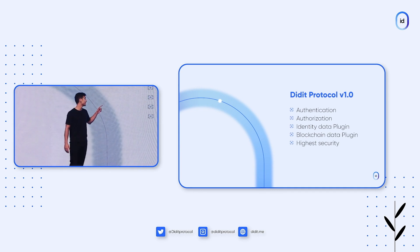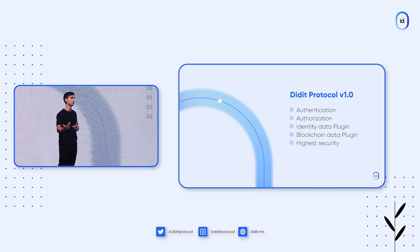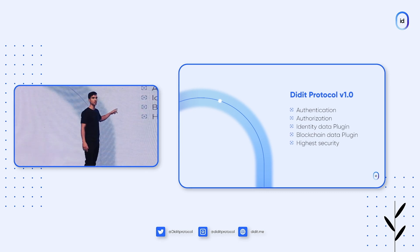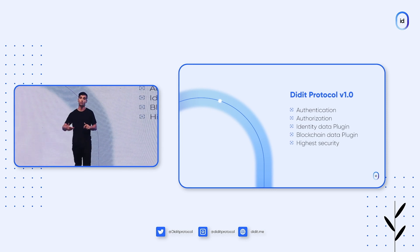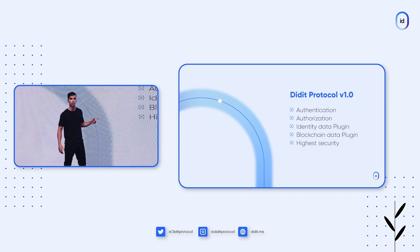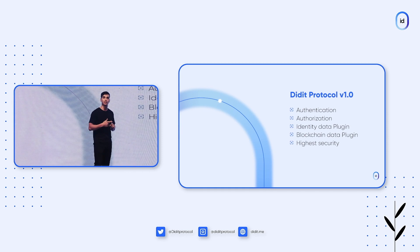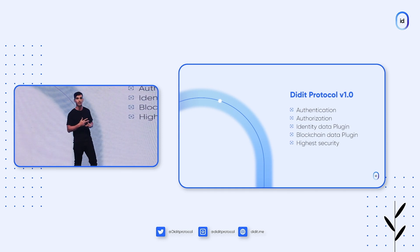Then we tackle the identity data plugin, so service providers can view or modify users' data and even upload files. We also have the blockchain data plugin, so service providers can see the tokens, collectibles, or transactions on the blockchain from these users. And we did it with the highest security possible — encryption and sealing of tokens using the best security practices on the market, using hardware security modules.